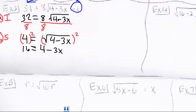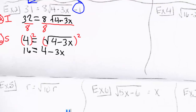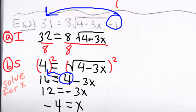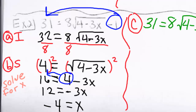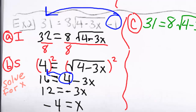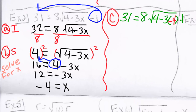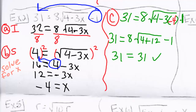We square both sides to get 16 equals 4 minus 3x, and now we solve for the variable x, so x is equal to negative 4. Our last step is to check the answer. Plugging in negative 4 into the original equation gives us 31 equals 31, so negative 4 is our answer.